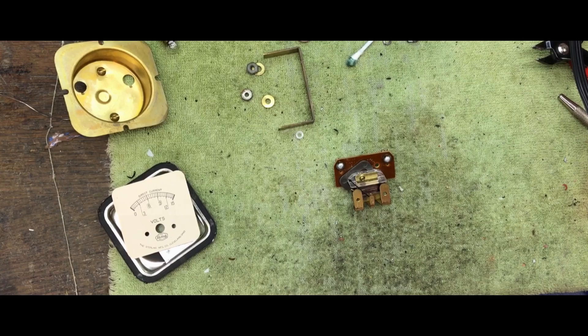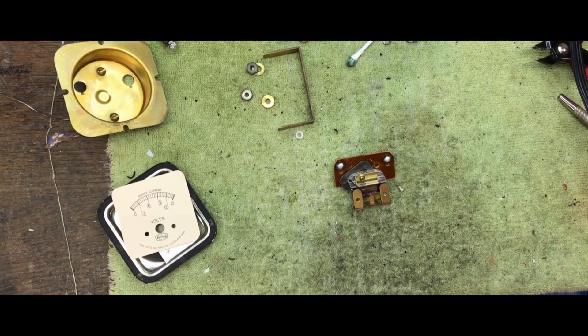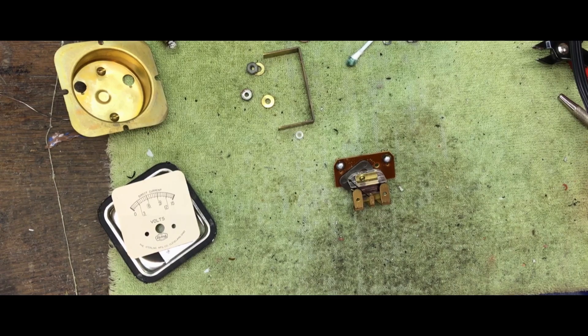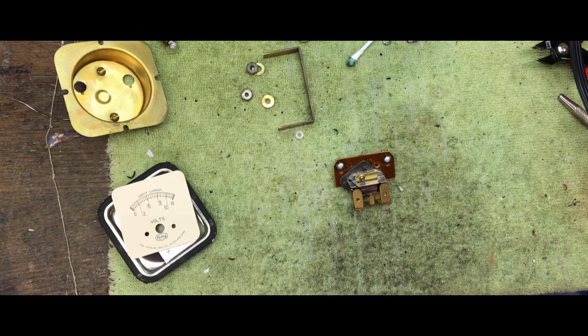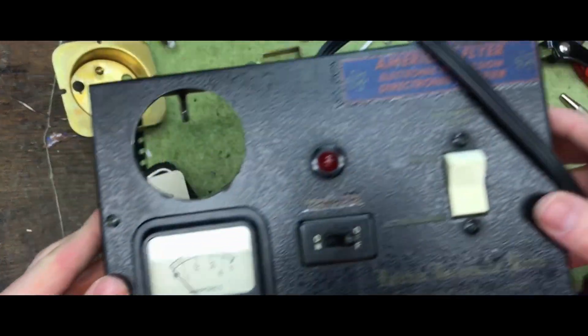Hello, I am working on my new control box for my DC American Flyer loop. This is going to include an amp meter and volt meter as well as a directional control and it's going to be housed in this box.